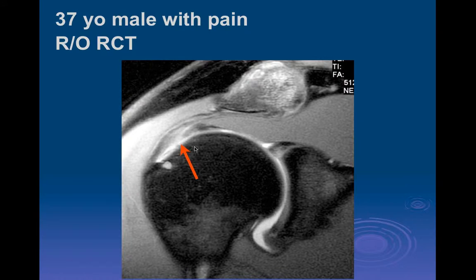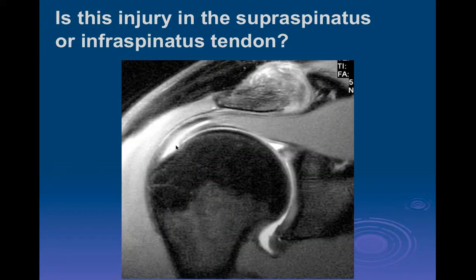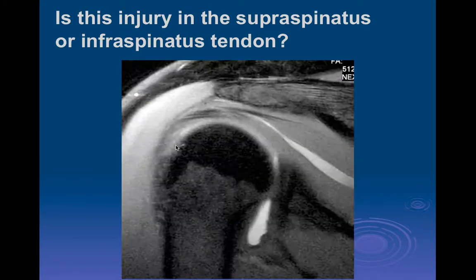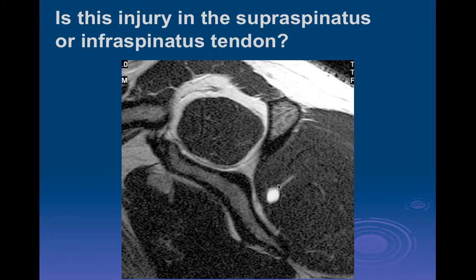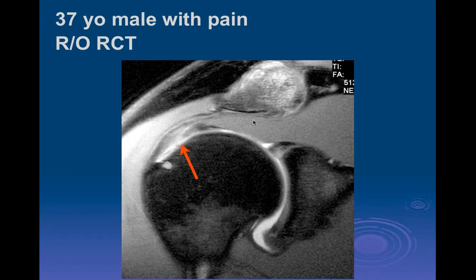Here's a 37-year-old male evaluated for rule-out rotator cuff tear. We can see a tear extending to the inferior articular surface, and if you follow it farther out, it extends primarily into the infraspinatus. Even though this looks like it's in the supraspinatus tendon, you have to realize that the posterior third of the fibers of the supraspinatus and the anterior half to a third of the infraspinatus fibers co-mingle when they insert on the greater tuberosity—they really overlap in that location.